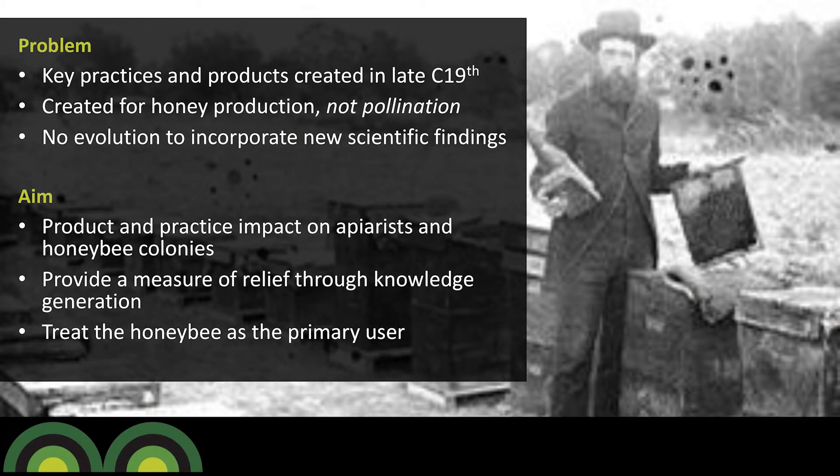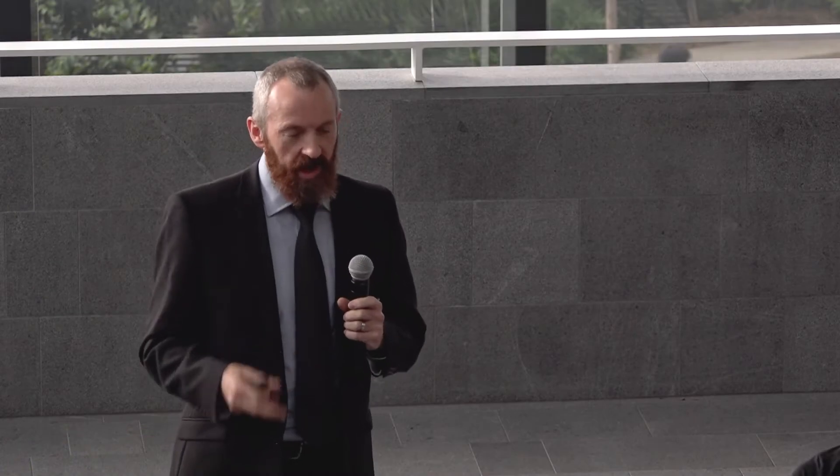This project started off with my PhD interest in bees, where I noticed that beekeeping products and practices haven't changed since the mid-19th century, around 1854 onwards. All the products and practices we use today were actually created for honey production, not pollination. The problem with that is that today honey production is worth about 2.3 billion dollars globally, whereas pollination is worth two orders of magnitude more — about 230 billion dollars per annum.